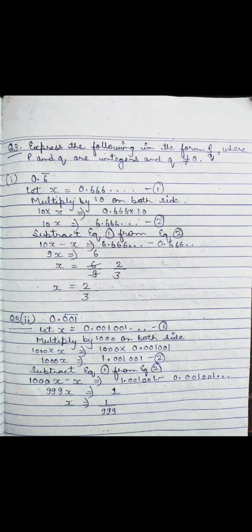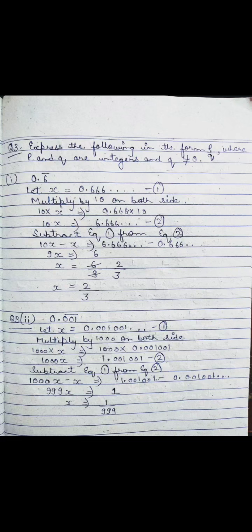Question number 3: Express the following in the form p/q where p and q are integers and q ≠ 0. The first part gives us 0.6 with a bar. The bar means the digit 6 keeps repeating, i.e., 0.666... We write: let x = 0.666... and call this equation 1.